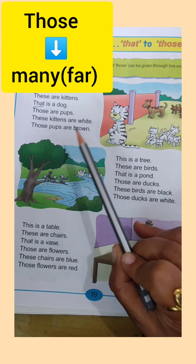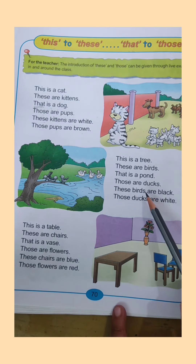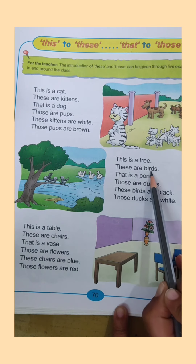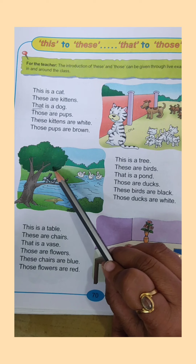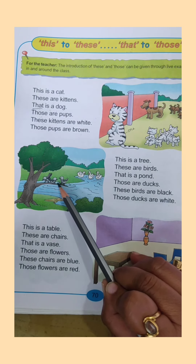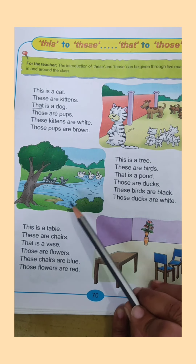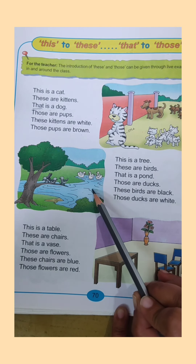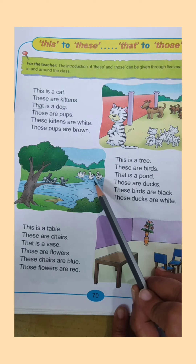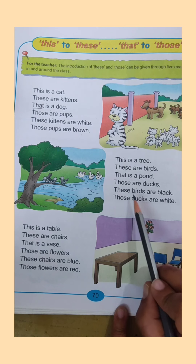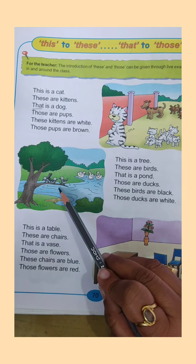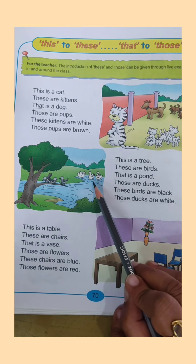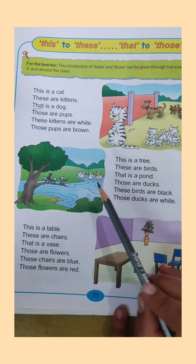Next picture: 'this is a tree' — near, one object. 'These are birds' — near and many. 'That is a pond' — the pond is far, so we use 'that.' 'Those are ducks' — many and far, so we use 'those.' 'These birds are black' — near, so we use 'these.' 'Those ducks are white' — far, so we use 'those.'